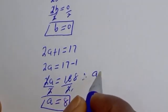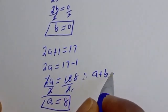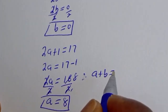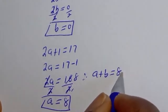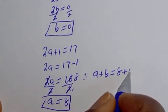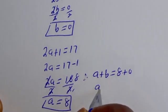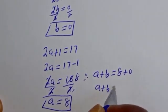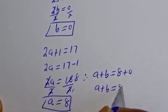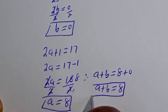From case 1, 2a plus 1 equals 17, giving a equals 8. Therefore, a plus b is equal to 8 plus 0, which means a plus b is equal to 8. This is the answer for case 1.